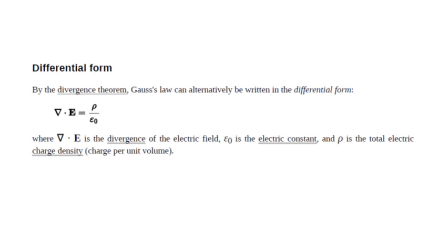In differential form, Gauss law can alternatively be written as del dot E equals rho over epsilon zero. This is converted using the divergence theorem — the surface integral can be converted into a volume integral. In place of E dot dA over the whole surface, you can calculate del dot E. So del dot E equals rho over epsilon zero — this is called the differential form of Gauss law, and the integral of E dot dA equals Q over epsilon zero is the integral form.